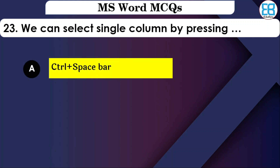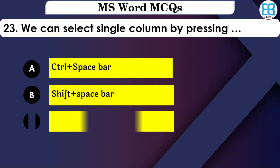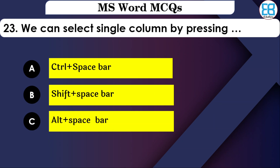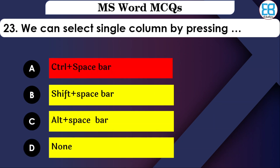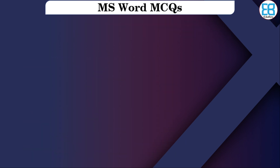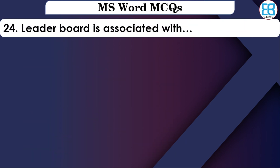We can select a single column by pressing which shortcut? The options are: Ctrl+Space Bar, Shift+Space Bar, or Alt+Space Bar. The correct option is Ctrl+Space Bar.